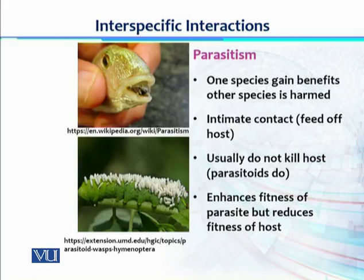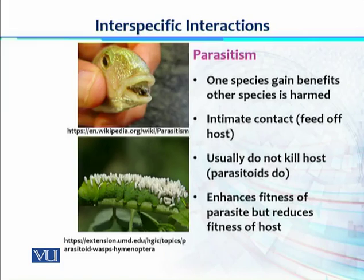The next type is parasitism. Parasitism is a dangerous relationship because here one species gets the benefit from its host, while the other species is being harmed. The species being fed upon is called the host, and the individual harming its host is called the parasite. The parasite and host have intimate contact — parasites feed off their host and might or might not kill the host; they may only cause harm or disease, or in other cases they would kill it.